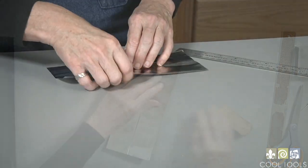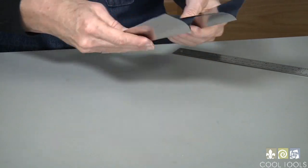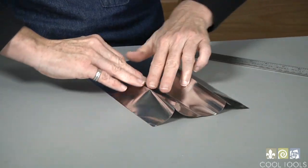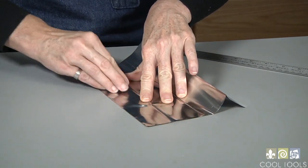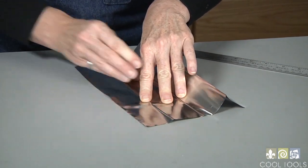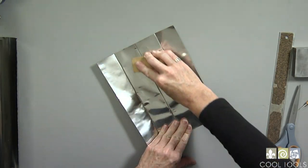Now I'll open it up and turn it over so that I can burnish these folds down flat. Get this started with my fingers and then use the burnisher to flatten these out so it lays nice and flat.